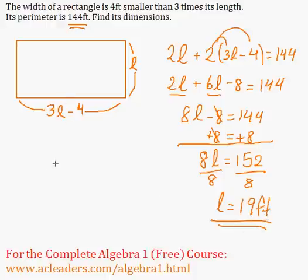What about the width? What is the width? Well, the width is 3L, so 3 times 19 minus 4. So 3 times 19 is—I'm just horrible at mental math, I need a calculator—57. It might be because I'm tired today. 57 minus 4 is 53.